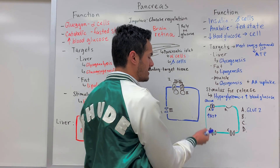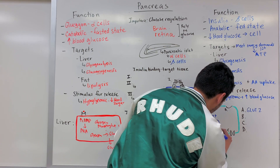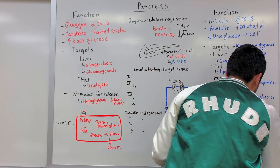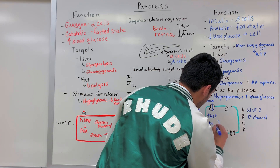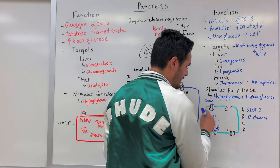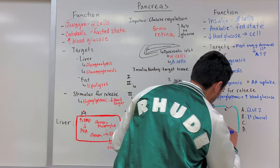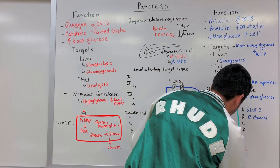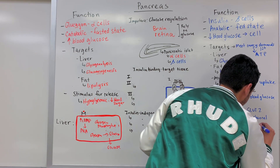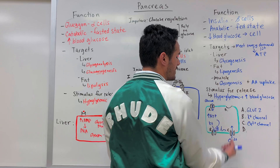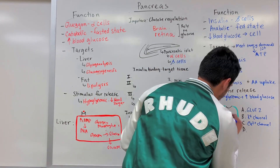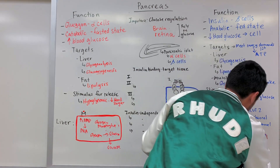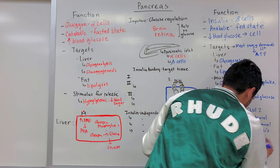After we increase ATP production, a potassium channel closes, preventing potassium from leaving the cell. With this positive ion retained, membrane depolarization results. This causes a calcium channel to open, allowing calcium to influx. That calcium is important because it allows the release of insulin stored in vesicles — so exocytosis of insulin occurs.